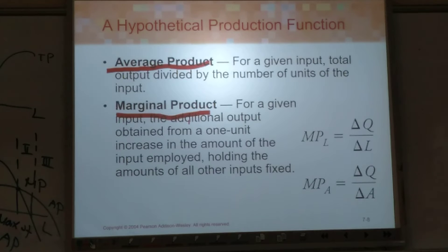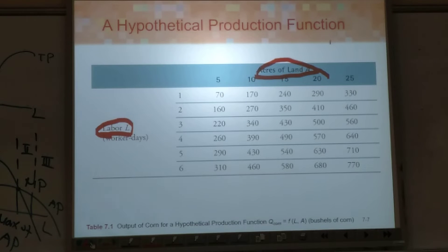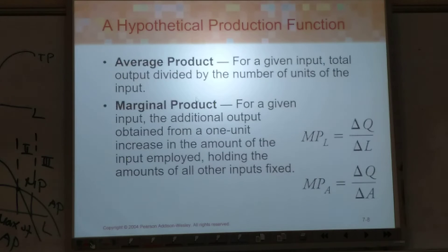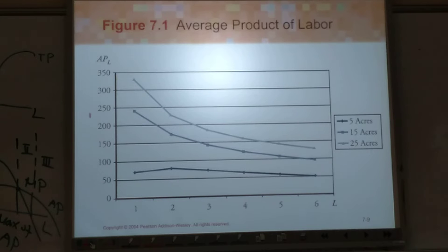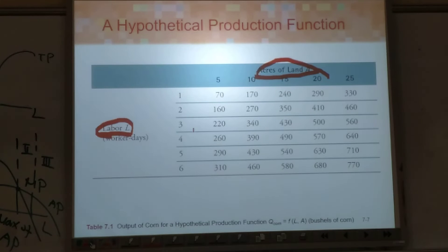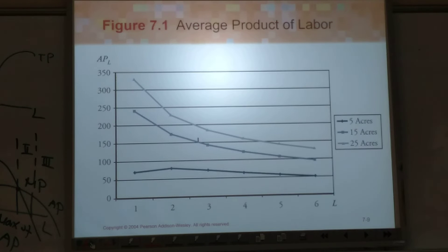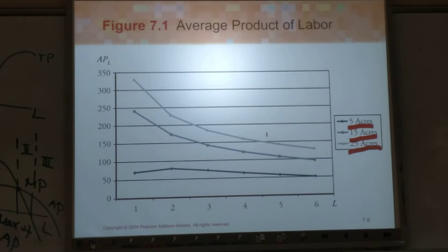If you check the table — and when I say 'table' I mean the data table, not the desk — this diagram or figure actually comes from the book. So you read the book and check what's going on there. You have three different levels of capital: 25 acres, 15 acres, and 5 acres. Here is the production level and the difference. The highest capital is 25 acres, then 15 acres, then 5 acres.